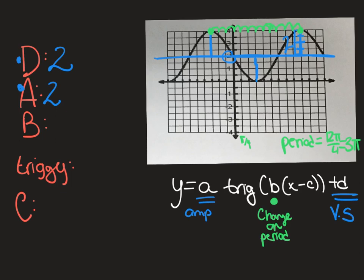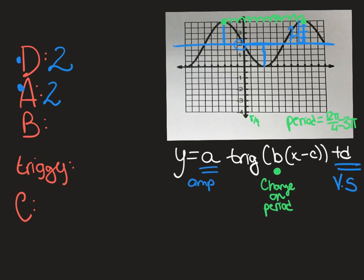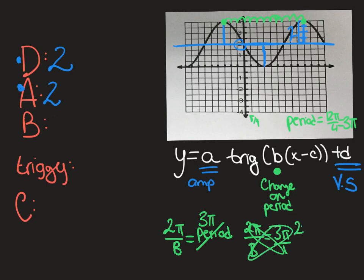So I'm going to use this information and the little formula to calculate my B value. So 2 pi over b equals my period. In our case, the period was 3 pi. So I'm going to solve 2 pi over b equals 3 pi over 1, and I'm going to cross-multiply. So 2 pi equals 3 pi b. These pi's are going to cancel out, and you're going to get that 2 thirds equals your b value. So over here, I'm going to put 2 thirds.